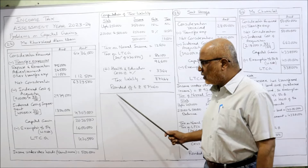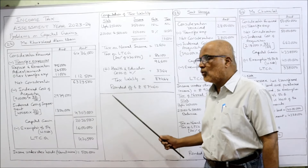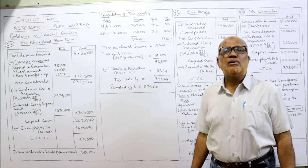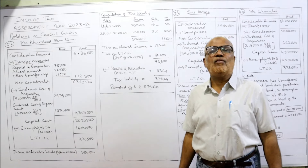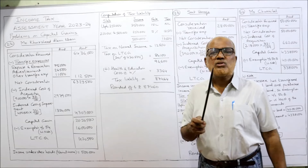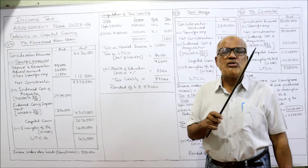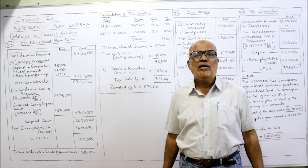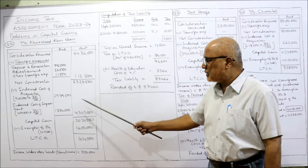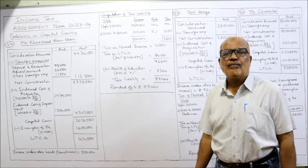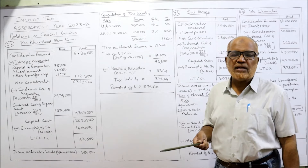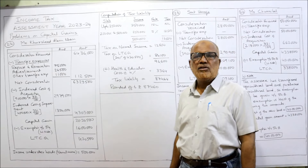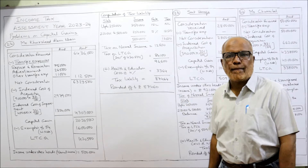In examination you must write a working note: the assessee sold one residential house and purchased another, so exemption under section 54 is given as the least of two amounts — cost of new house plus amount deposited in Capital Gain Account Scheme (Rs. 15,00,000 + Rs. 1,00,000 = Rs. 16,00,000) or the capital gain amount of Rs. 20,20,500. The least is Rs. 16,00,000, so Rs. 16,00,000 is allowed as exemption under section 54.